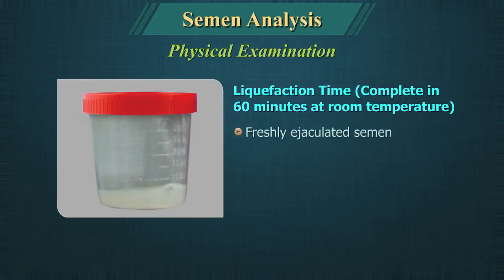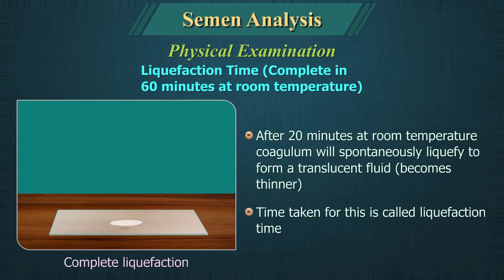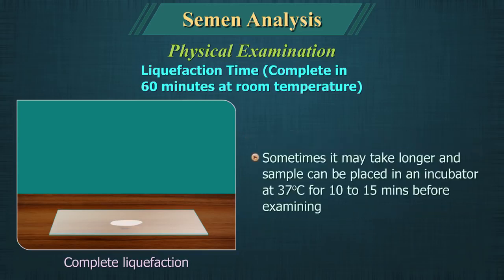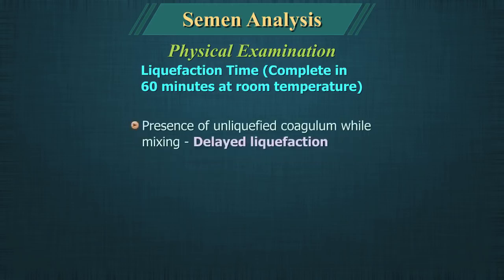Liquefaction Time: Freshly ejaculated semen is highly viscid, opaque, white or grey. After about 20 minutes at room temperature, the coagulum will spontaneously liquefy to form a translucent fluid — it becomes thinner. The time taken for this is called liquefaction time. Sometimes it may take longer, and the sample can be placed in an incubator at 37°C for 10 to 15 minutes before examining again. Failure to liquefy or delayed liquefaction may indicate inadequate prostatic secretion.